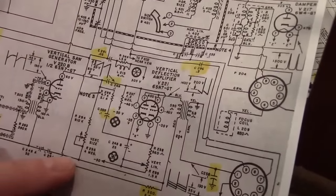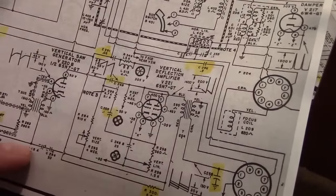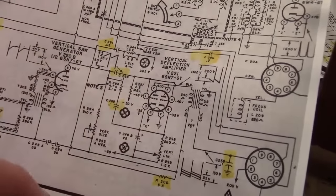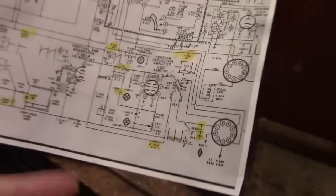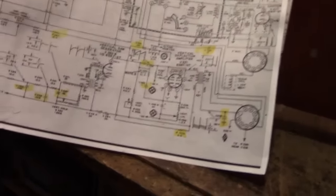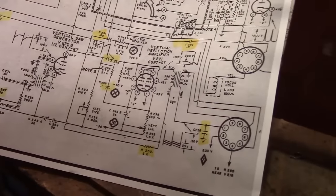So if we trace this out, I think we will see it. The vertical side is right there, and then the deflection amp. Typically sets need a little more voltage than B-plus can supply for the vertical. So they steal a little bit from the flyback circuit.